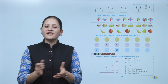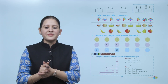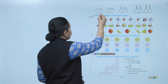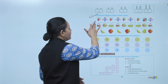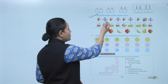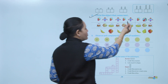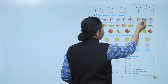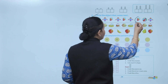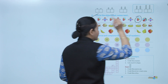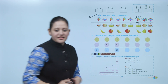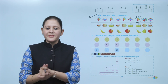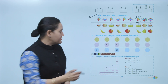Next: circle the object that comes next. First balloon, then kite, balloon, kite, balloon, kite, balloon, kite — then balloon. So circle it like this.